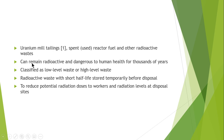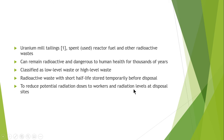Radioactive waste with a shorter half-life is stored temporarily in drums or barrels before being disposed of in landfills or other designated areas. This is done to reduce potential radiation doses to workers in nuclear power plants, and the radiation level of the shorter half-life waste is significantly reduced before it is dumped at disposal sites.